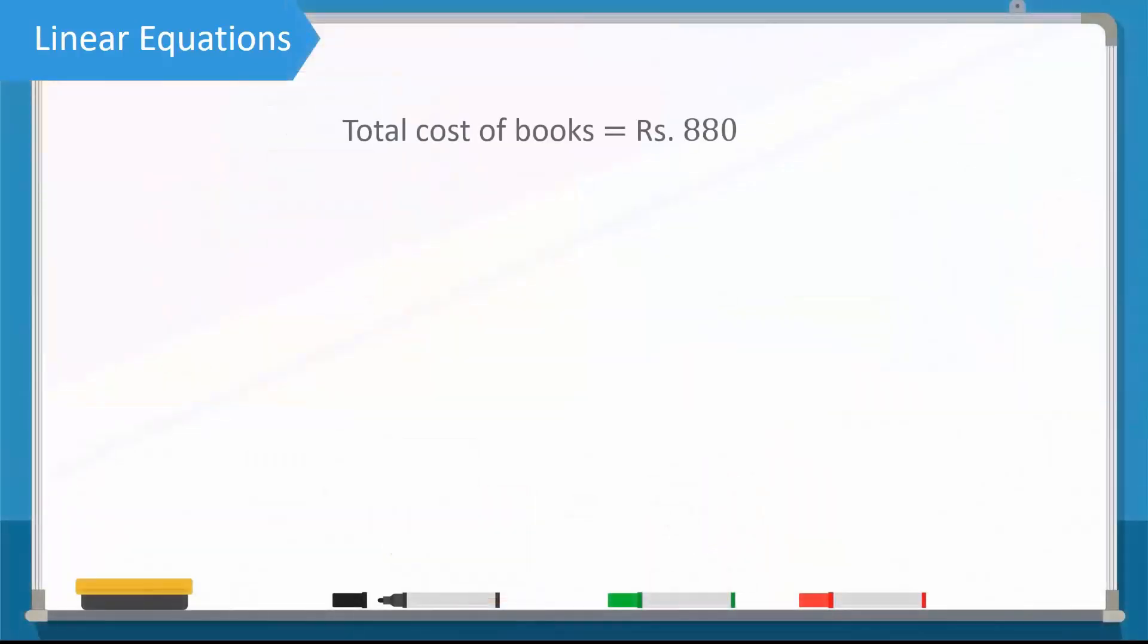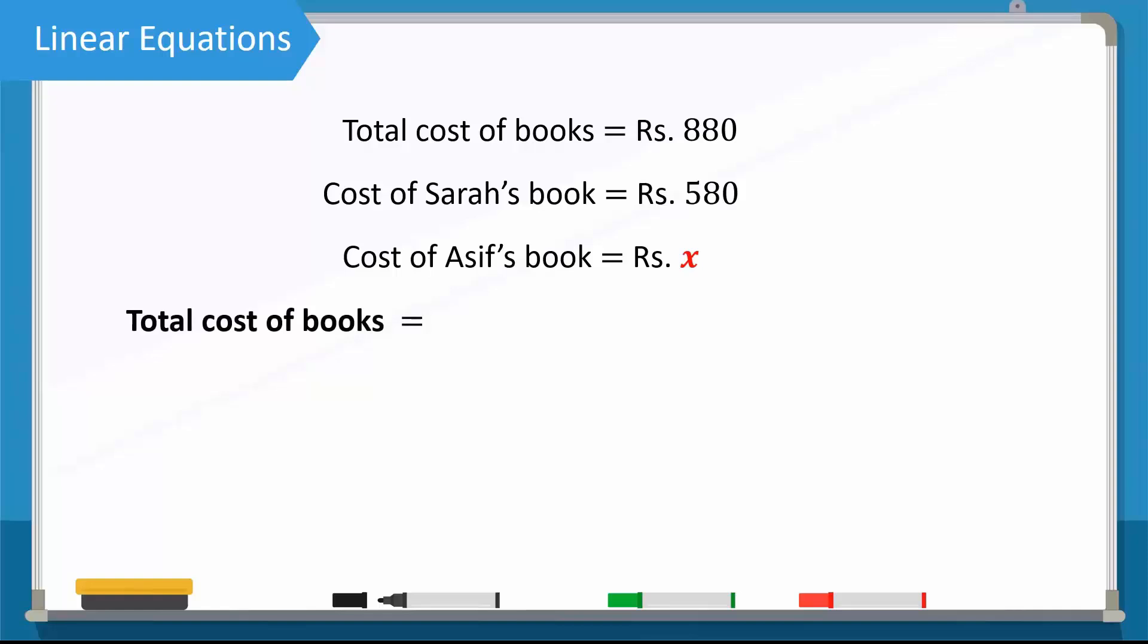First, let's write the total cost Asif and Sara paid for their books, rupees 880. The cost of Sara's book is rupees 580. Since we don't know the cost of Asif's book, we will denote it by the variable x. Now, write an equation for the total cost. The total cost of books is equal to Sara's book plus Asif's book. Replacing the given values in the formula,